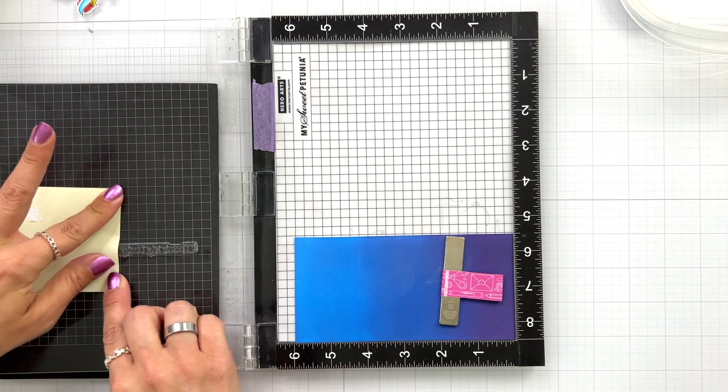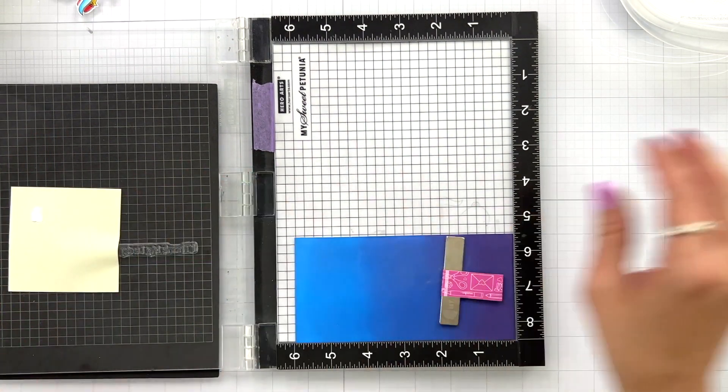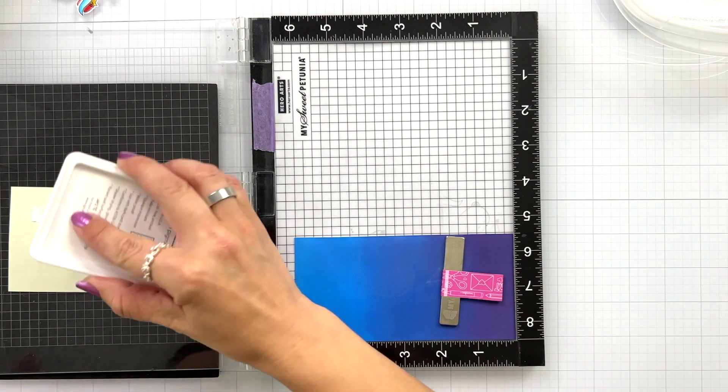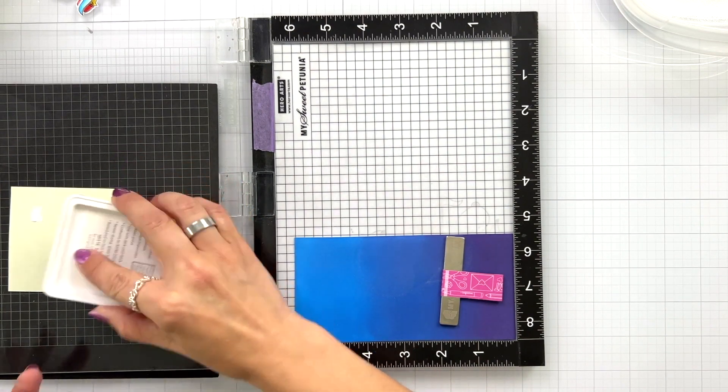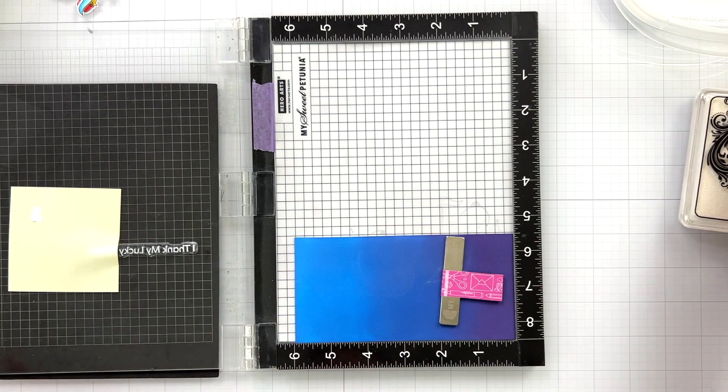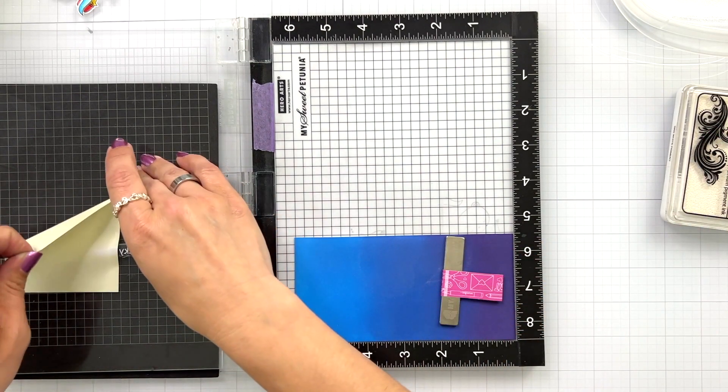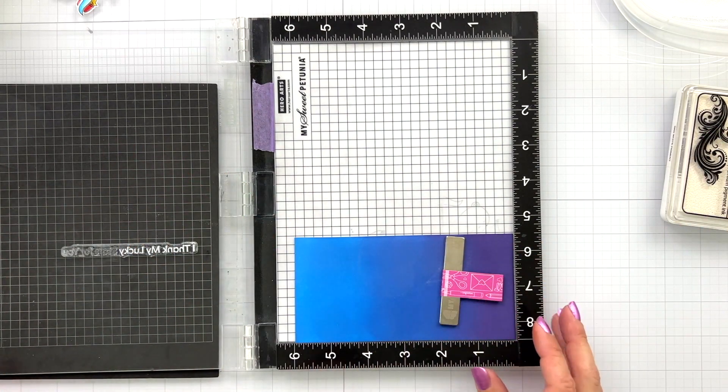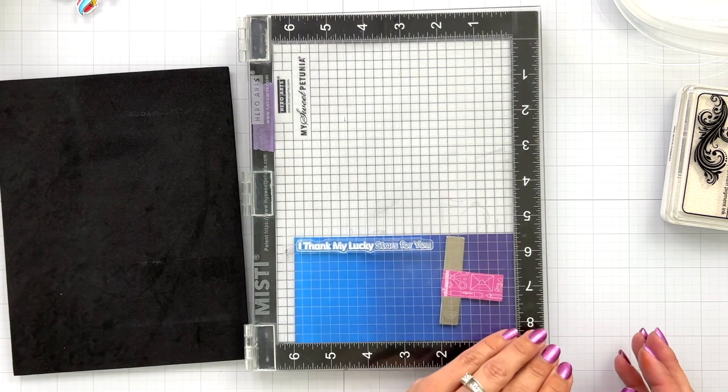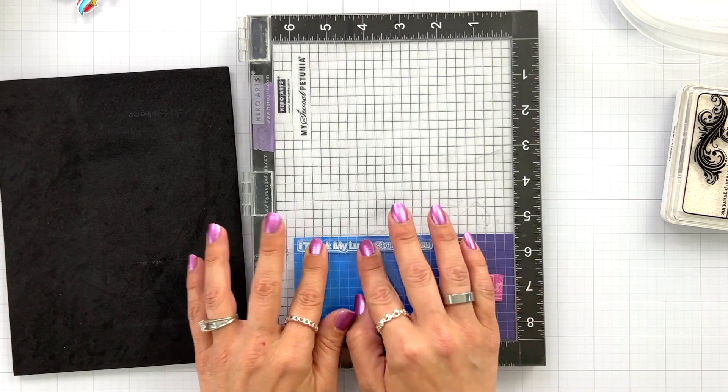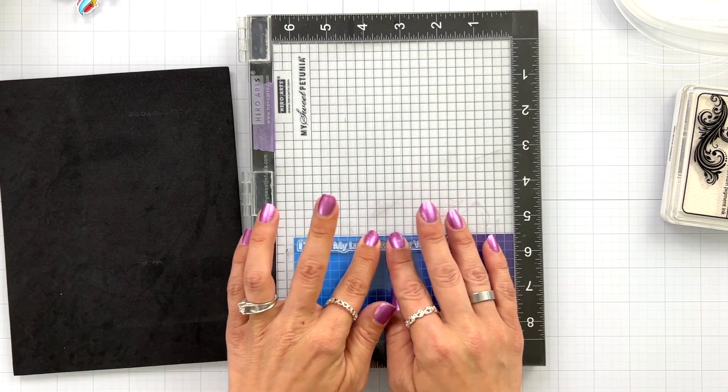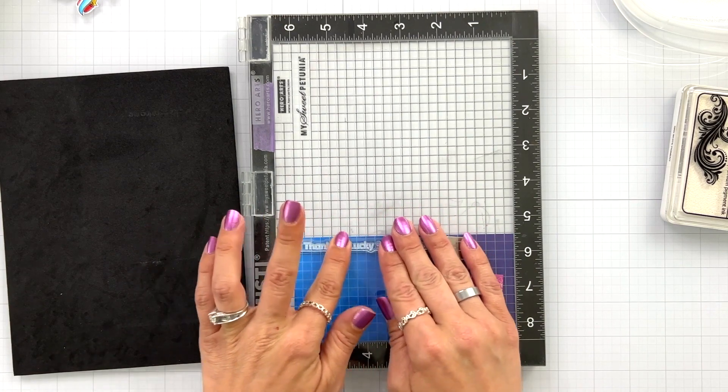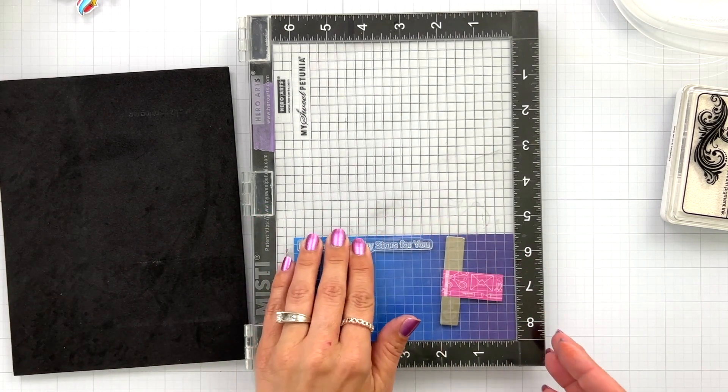Now I'm going to die cut the word stars so I need to mask off part of that sentiment with some post-it tape. I'm inking up the rest of that sentiment in white pigment ink. Then I'm going to remove that post-it and stamp this down. So all I'm going to have is thank my lucky and then I'll have the word die cut stars underneath.